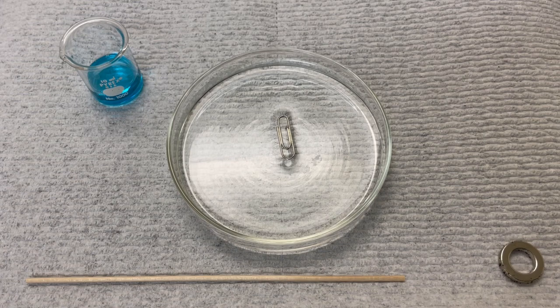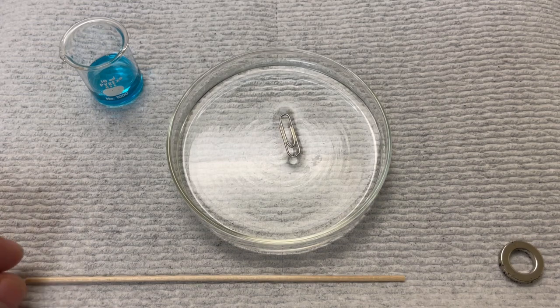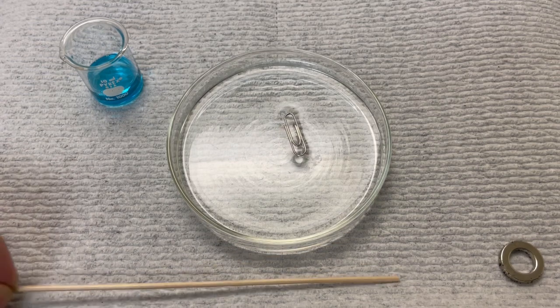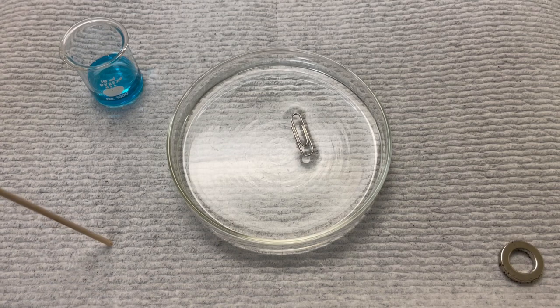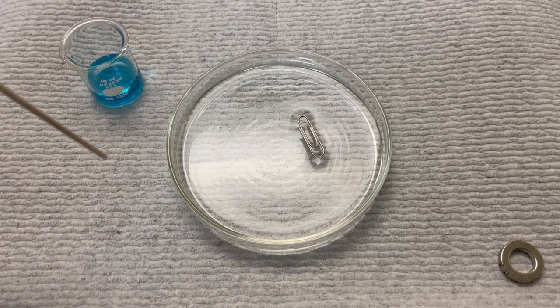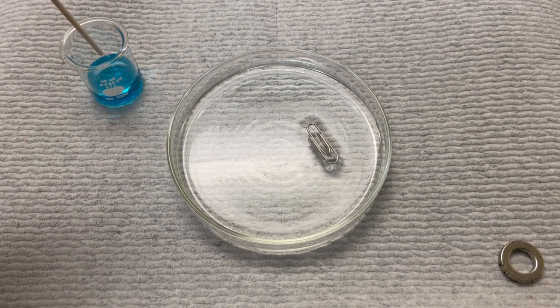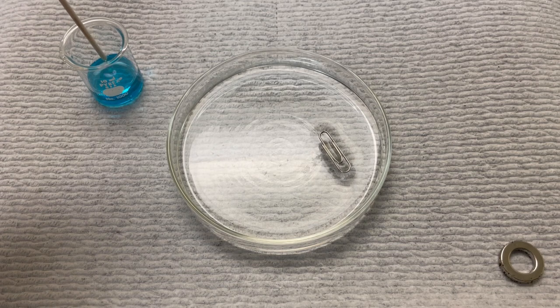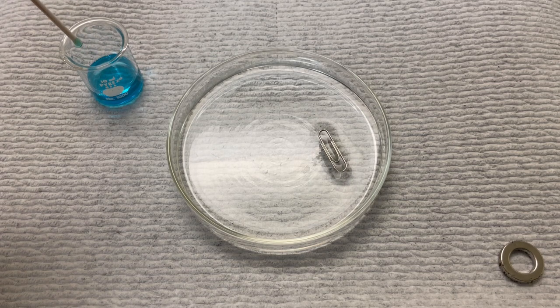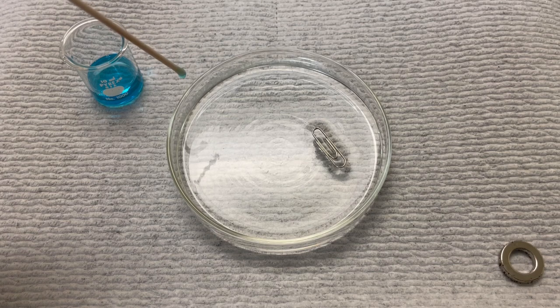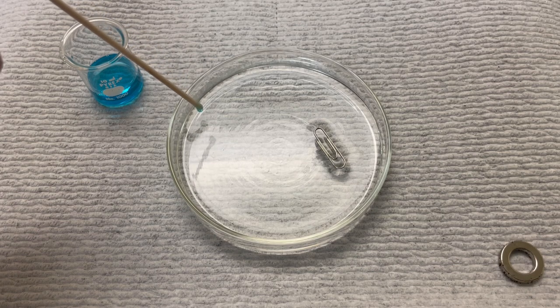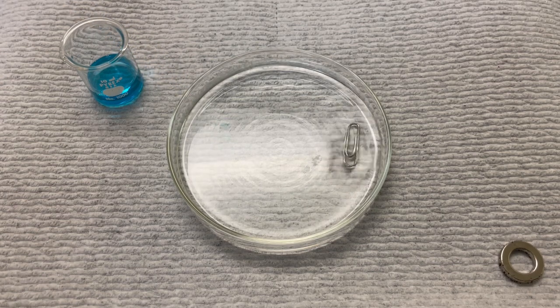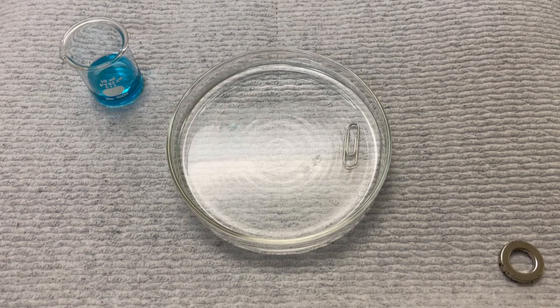But what I can do is disrupt that hydrogen bonding network by taking a little bit of Dawn dish soap, which I have here in this tiny beaker. I really only need to take a drop of this and bring it into contact with the water, and the paper clip sinks because the surface tension is disrupted.